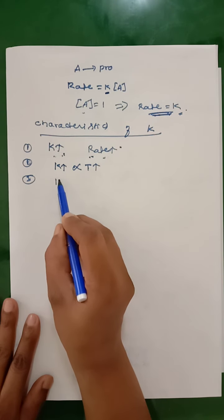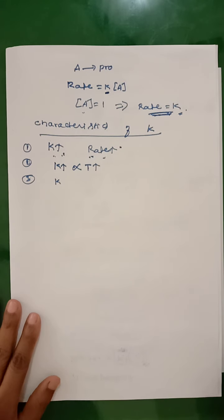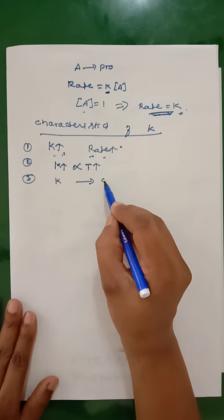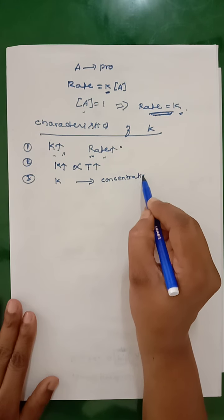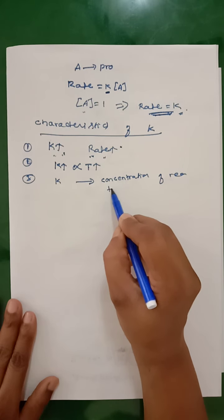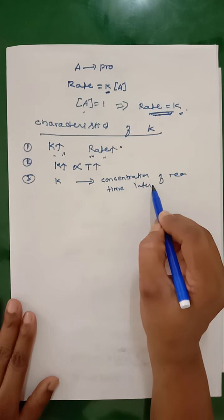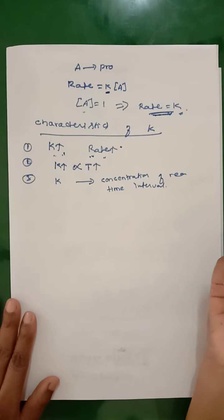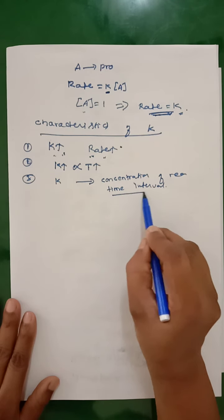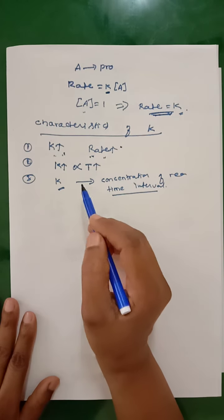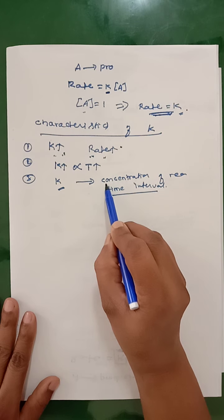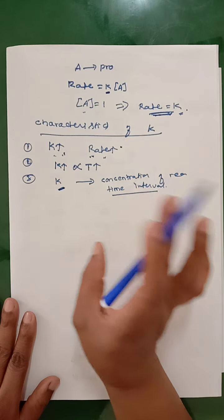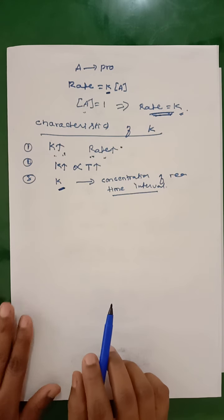The third characteristic is that the rate constant is independent of the concentration of reactants and also the time interval. Whether the reaction is at the beginning, the middle, or the end, for different intervals of time the value of rate constant remains the same. And also, if the concentration of reactant is high, low, or medium, the value of rate constant always remains the same. So these are the three different characteristics of rate constant.